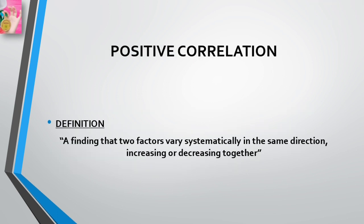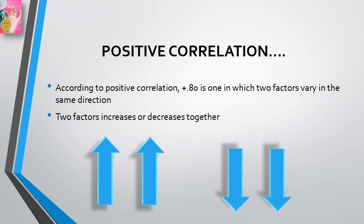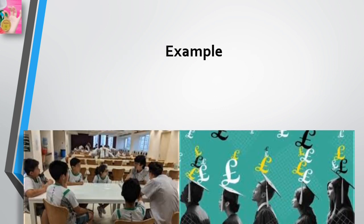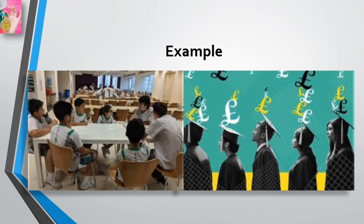A positive correlation is a finding that two factors vary systematically in the same direction — increasing or decreasing together. For example, a correlation of +0.80 means two factors vary in the same direction. There is a positive correlation between years of education and average annual earnings — as years of education increase, average yearly earnings increase, and as years of education decrease, average annual earnings decrease. Either way it is stated, the two factors vary in the same direction.